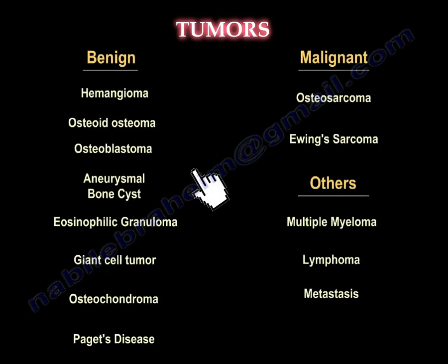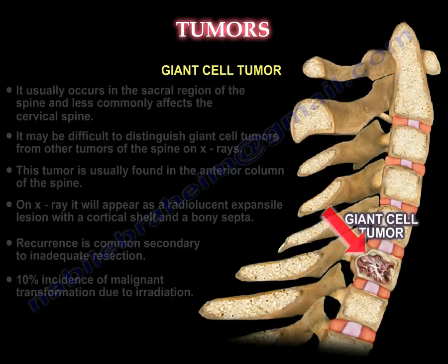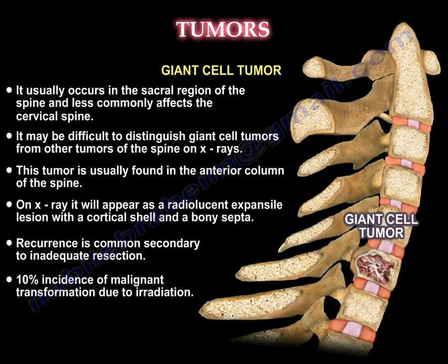Giant cell tumor usually occurs in the sacral region, less commonly in the cervical spine. Sometimes it is hard to distinguish from other tumors on X-ray. Usually it is found in the anterior part of the spine. It can appear as a radiolucent expansile lesion with a cortical shell and bony septa. Recurrence is common secondary to inadequate resection. There is about a 10% incidence of malignant transformation due to irradiation.